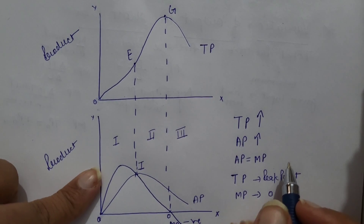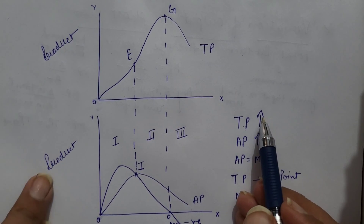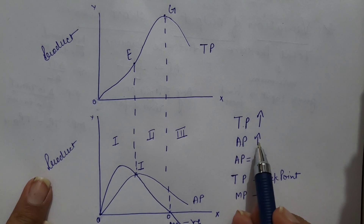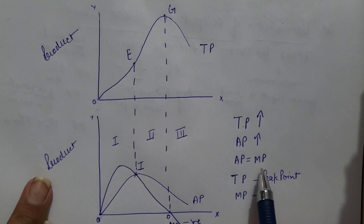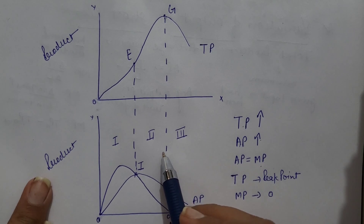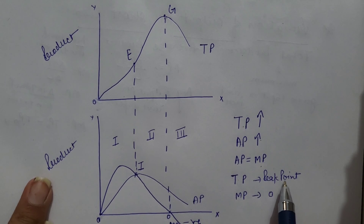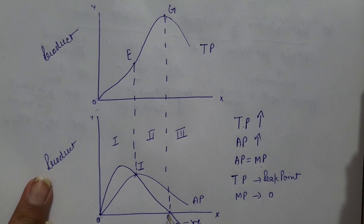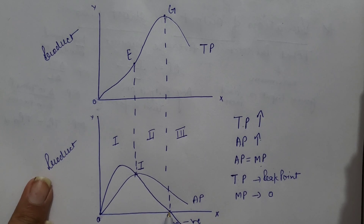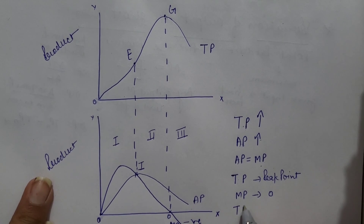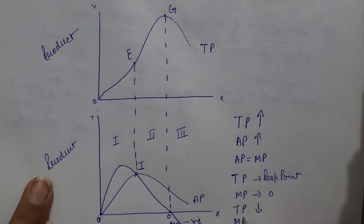In the first stage, total product increases at an increasing rate, average product also increases, and it equates marginal product. In the second stage, total product reaches its peak point and marginal product touches the x-axis turning zero. And in the third stage, total product declines and marginal product turns negative.